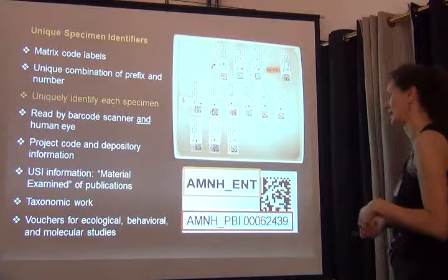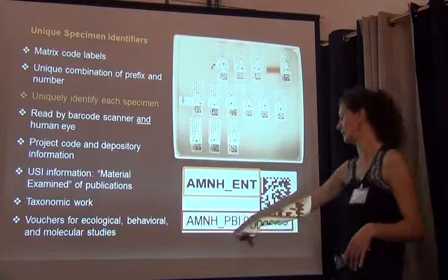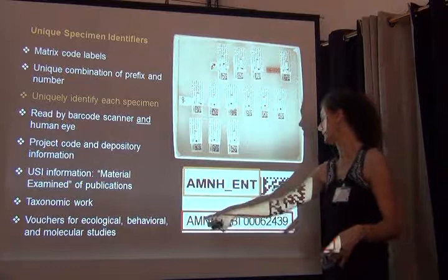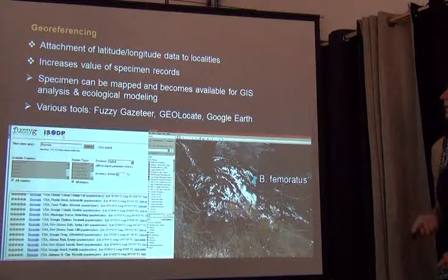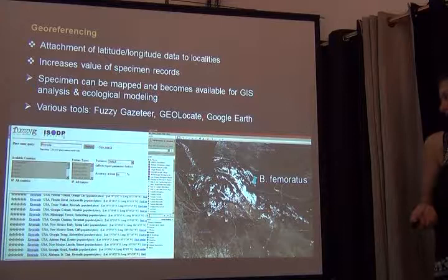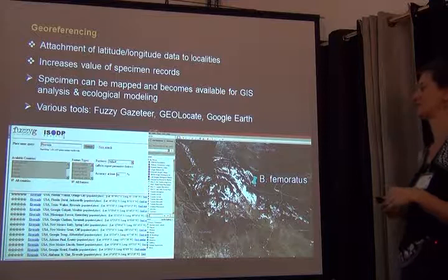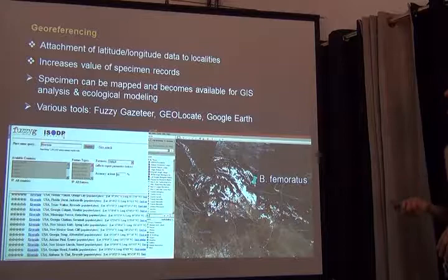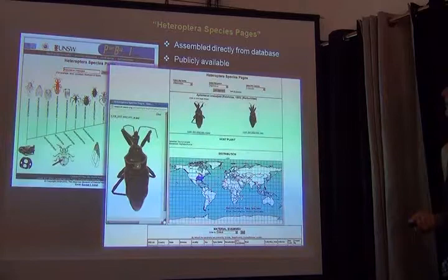So attaching specimen identifiers to each specimen is part of our normal workflows. We're using these matrix codes — you have essentially a prefix that points to a project capturing the data, then there's a number, and the unique code is also encoded in this matrix. Georeferencing I'm not going to be talking about here — we have different ways of doing that. Obviously the preferred thing is if a specimen label already comes with georeferences, though in practice this probably doesn't happen too often, especially with older material, but we have a full day to talk about georeferencing.